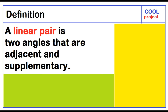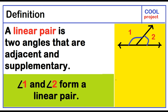A linear pair is two angles that are adjacent and supplementary. Angle 1 and angle 2 form a linear pair.